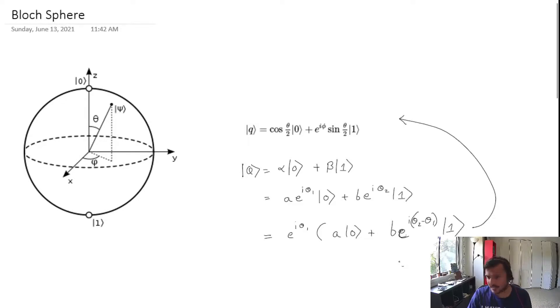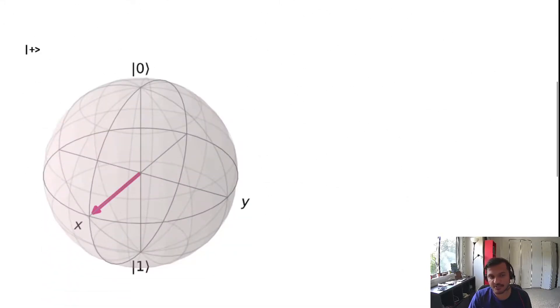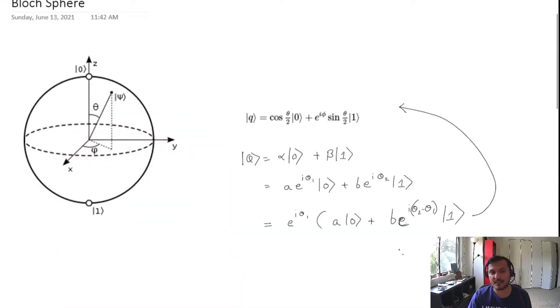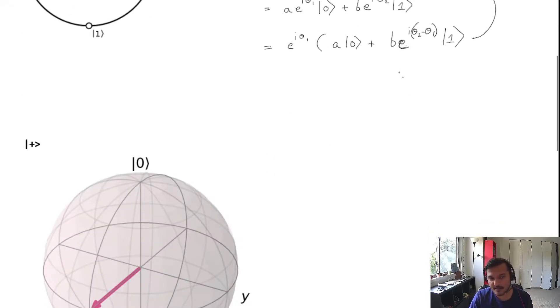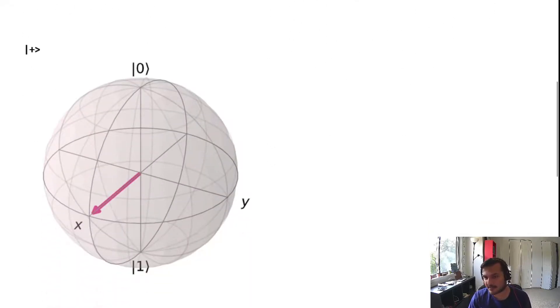This is one representation of states. Zero and one is one representation. I also mentioned the plus and minus representation for qubits. The plus and minus representation looks like this: zero and one lie on the z-axis, while the plus and minus lie along the x-axis. That's why they're the eigenstates of the X Pauli matrix.